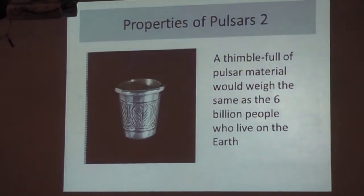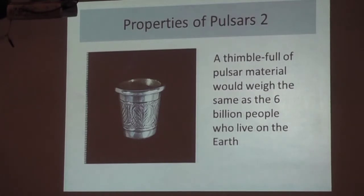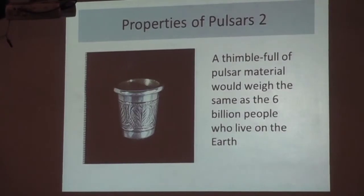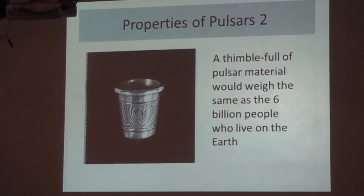Take a sewing thimble — preferably a nice, elegant, silver sewing thimble. Take the population of the world: you've got 7 billion people. Jam those 7 billion people into the thimble one by one. When you have them all in the thimble, the thimble weighs as much as it would if it were made of pulsar material. That's slightly more comprehensible, but it's still clearly a very big number.